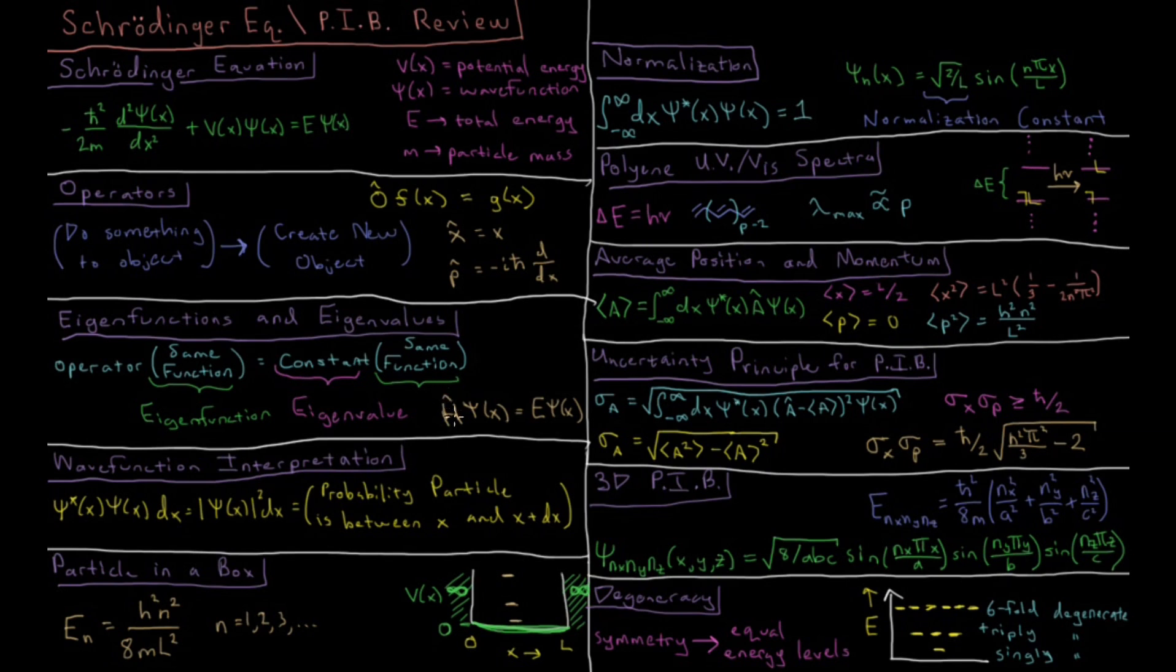A particular eigenvalue equation is the Schrödinger equation, so we can rewrite this equation up here in terms of a Hamiltonian operator acting on psi of x, and then that equals our total energy times psi of x. So the Schrödinger equation is an eigenvalue equation.